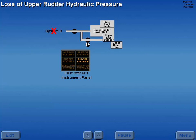Should a loss of system B hydraulic pressure to the upper rudder occur, the rudder system B light illuminates and the upper rudder is inoperative. No backup system is provided to power the upper rudder.